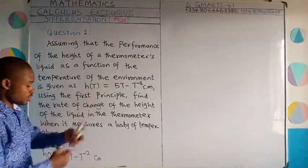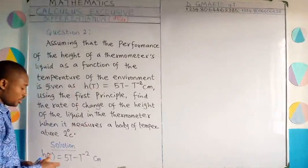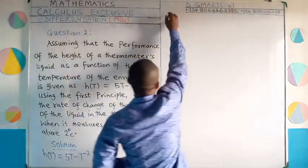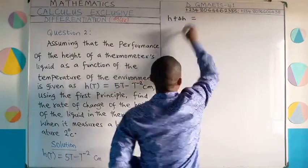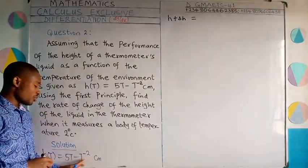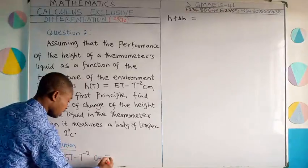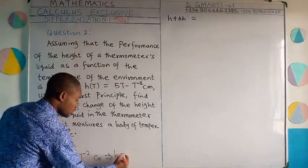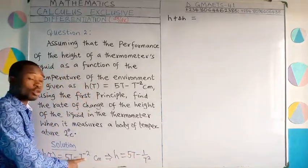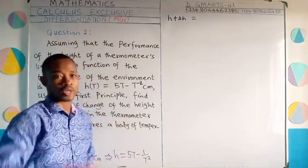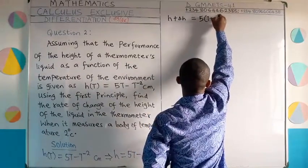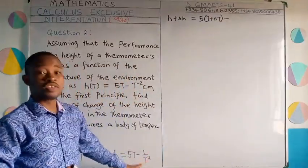Any change in temperature will affect the height of the liquid in the thermometer. We will have h plus delta h equal to the function with delta t added to wherever we have t. First, we rewrite t raised to the power minus 2 using the negative index law: t to the minus 2 equals 1 over t squared. So h equals 5t minus 1 over t squared.